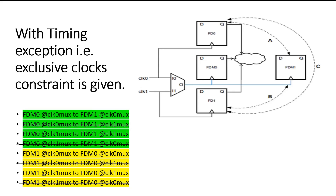Friends, this was all I had to discuss in this video. We will meet in the next video session where we will discuss the syntax of the clock constraints to declare two clocks as logically exclusive or physically exclusive clocks. With this I am going to end this video. I hope you liked it — if so, please press the like button and share your feedback in the comment section. We are going to have many such videos, so subscribe and press the bell icon to get notifications of all upcoming videos. Thank you so much for watching.